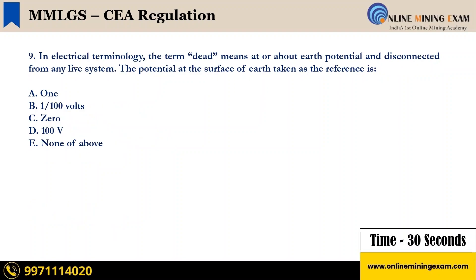Next question: in electrical terminology, the term 'dead' means at or about earth potential and disconnected from any live system. The potential at the surface of earth taken as reference is — A) 1, B) 1 by 100 volt, C) 0, D) 100 volt, E) None of the above. Time starts now.